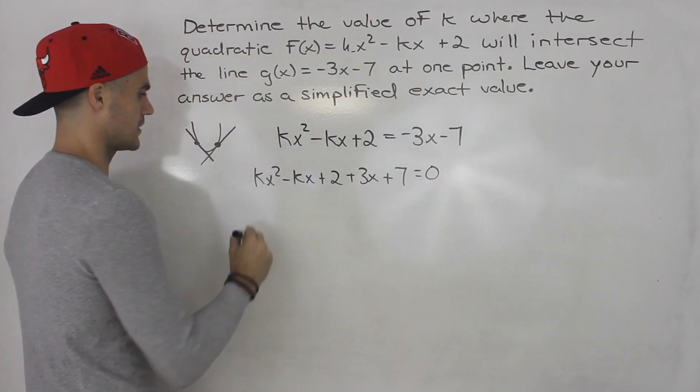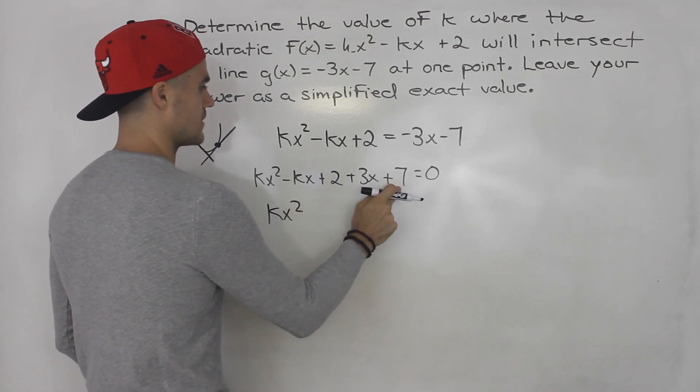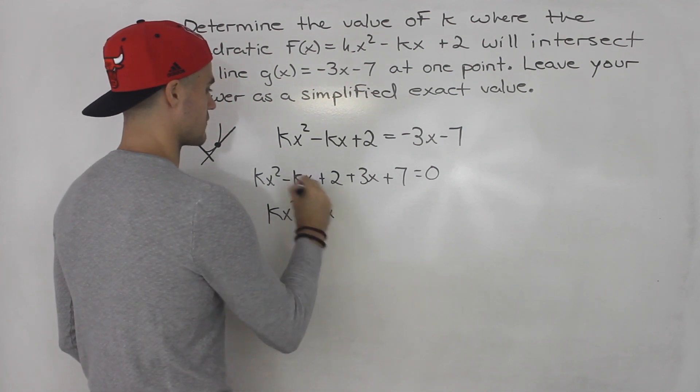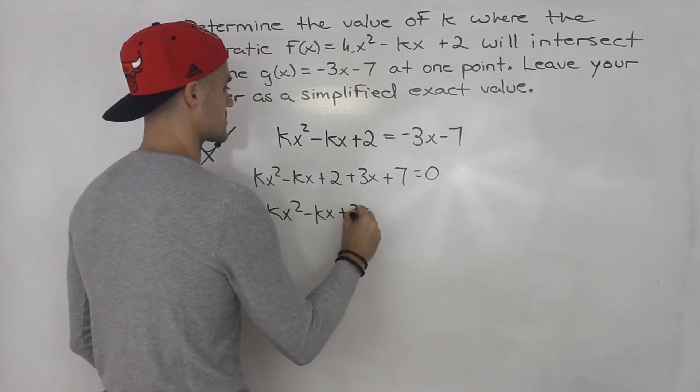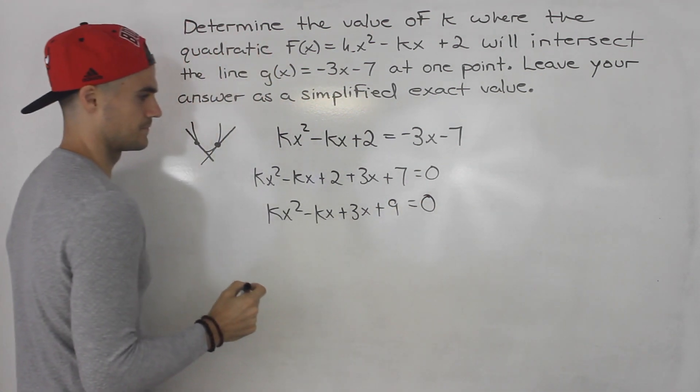And then here you want to collect some like terms. So we'll have kx², this 2 and this 7, that ends up being 9. So we'll put that at the end. So we'll have minus kx plus 3x plus 9 is equal to 0.